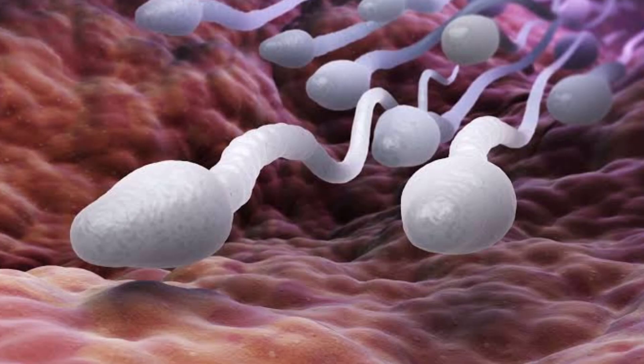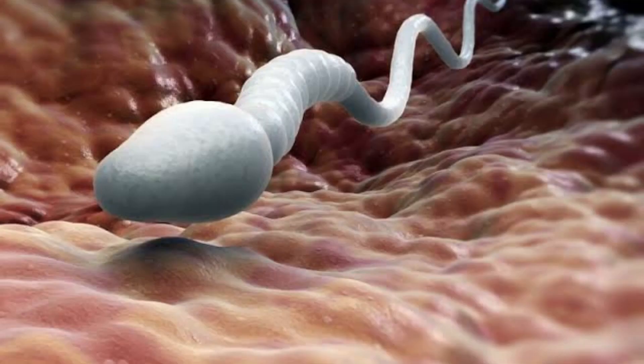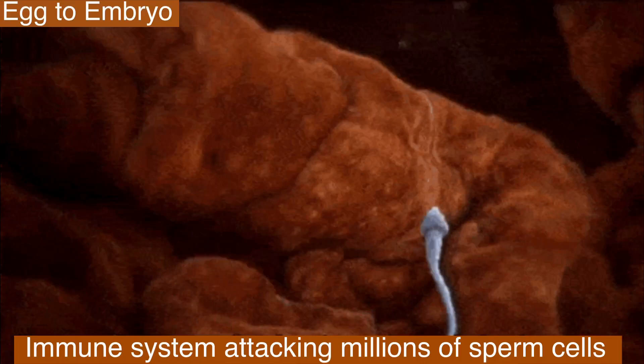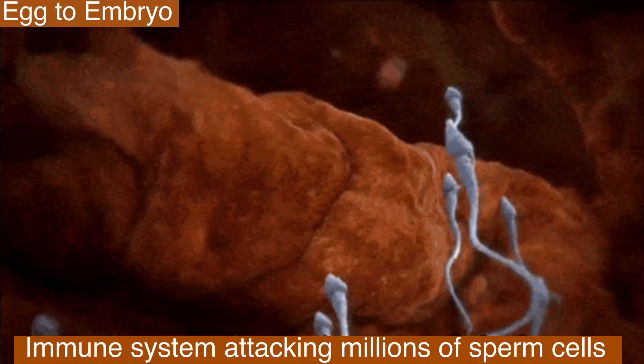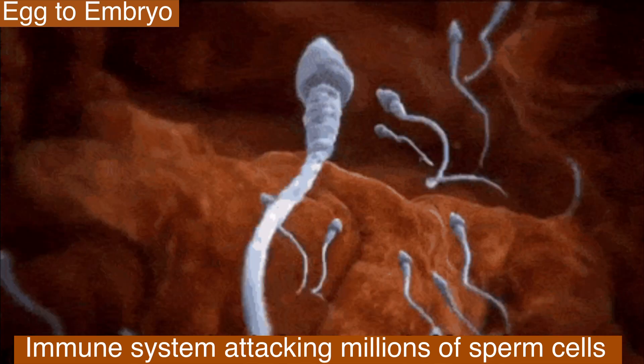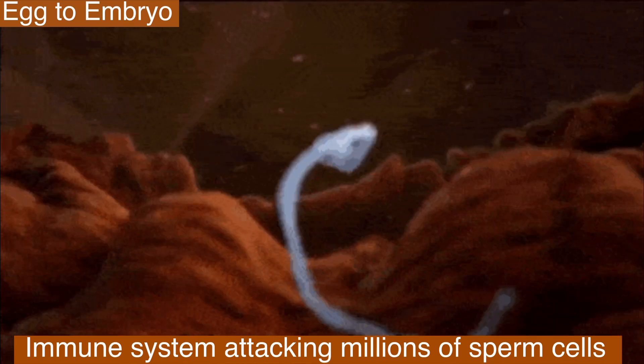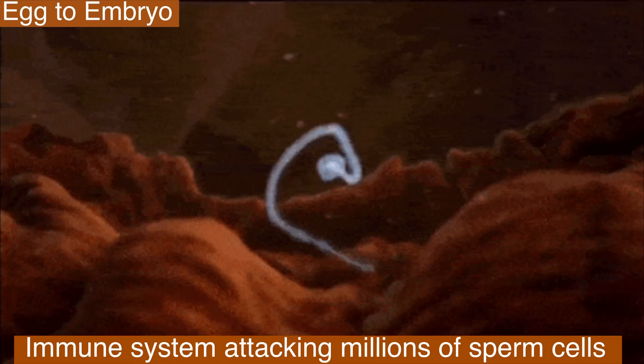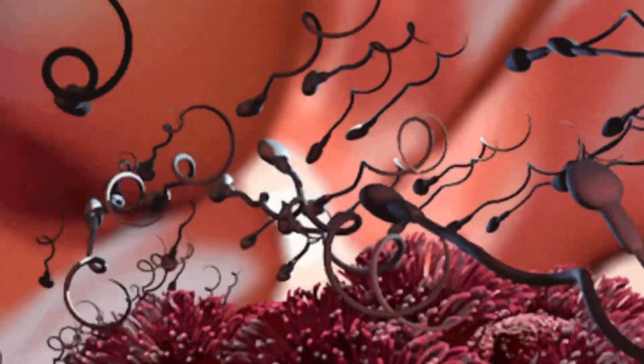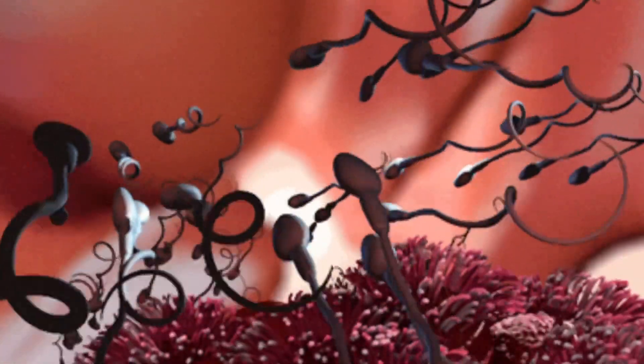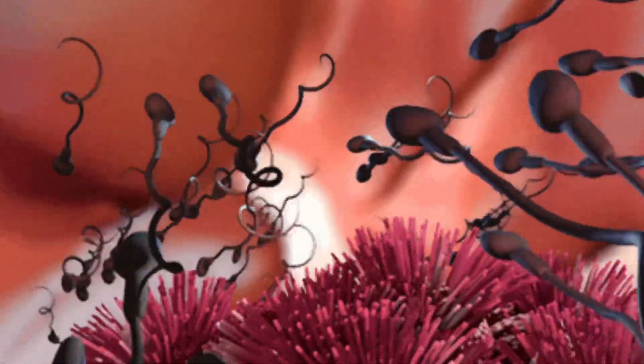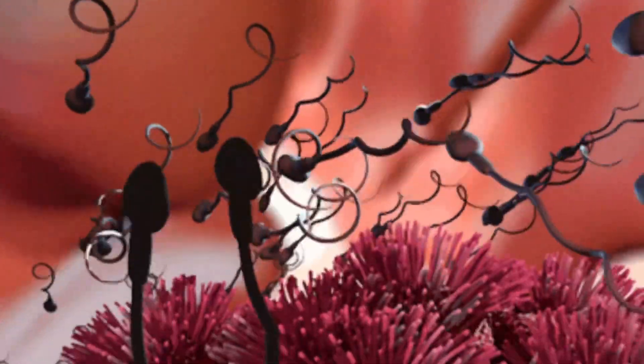The sperm cells that do make it through into the uterus continue to swim towards the fallopian tube. In the uterus, the woman's immune system will attack millions of sperm from all directions, thinking they are invaders. A lot more sperm will die. The rest will continue the journey to the fallopian tube.